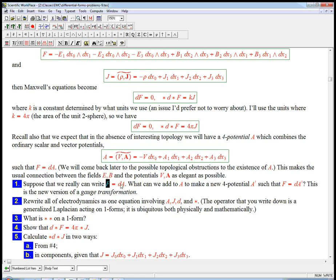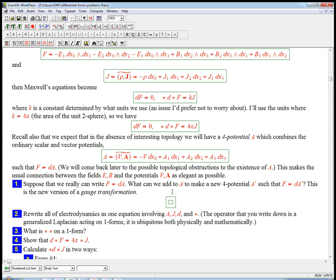So let's assume that we really can write F equals dA, and one of the things that you may have seen, if you've ever seen the vector potential, is the fact that it's highly non-unique. You can change A to a new potential A prime in what is a slightly complicated way in the old style, to create a new potential. Well, here it's very easy. What could we add to A to make A prime? So A prime equals A plus, well, we just need to add something so that F equals dA and F equals dA prime. We need to add something whose d is zero.